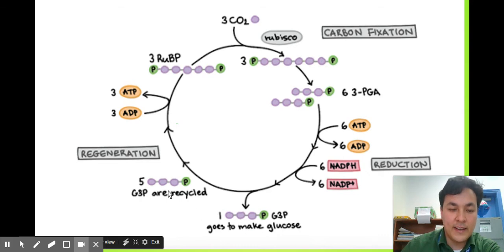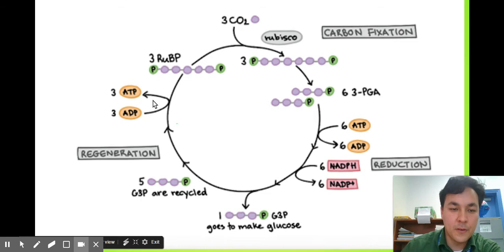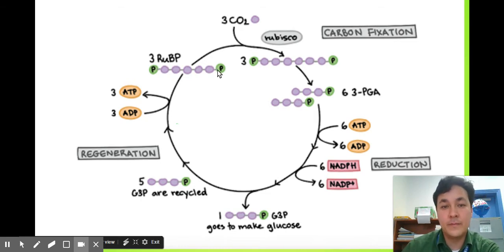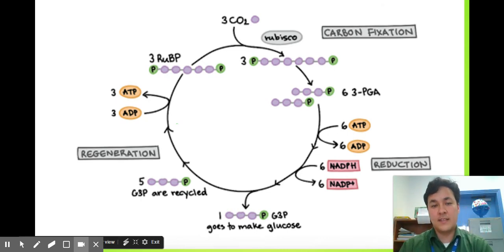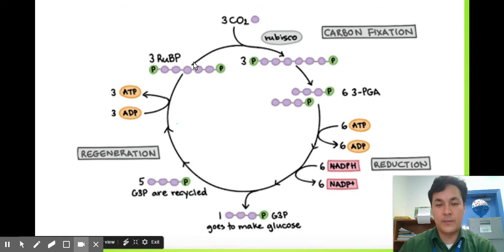The cycle recycles the leftover G3Ps to remake the starting molecule. You might ask yourself, why don't we just join six CO₂ molecules together? It's actually more efficient for the plant to go through this cycle.